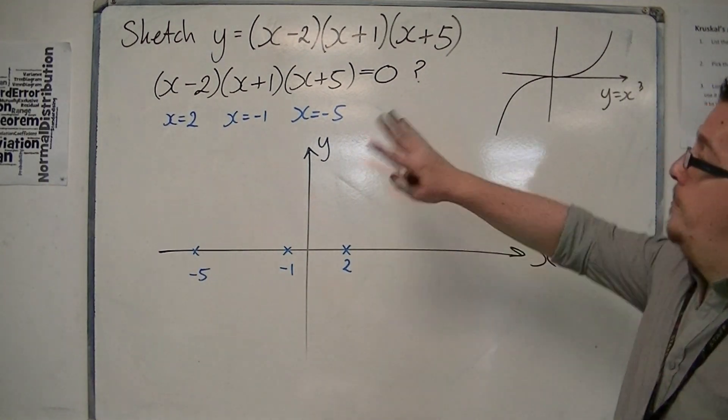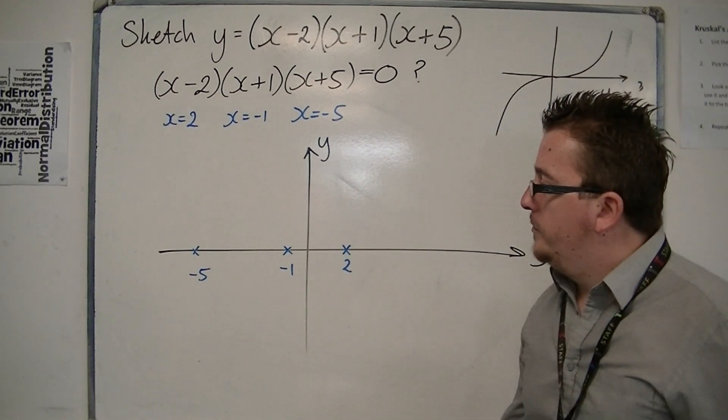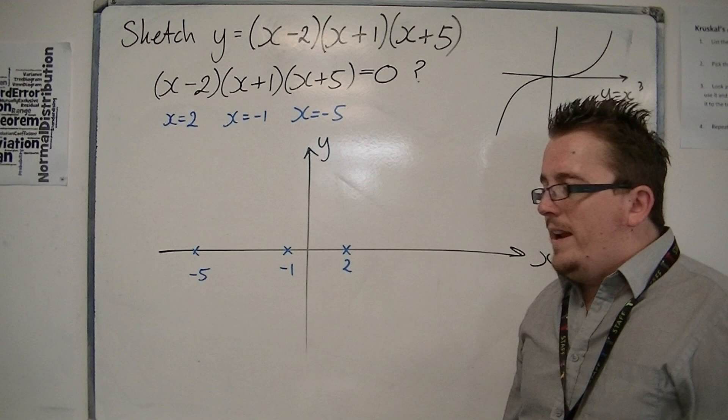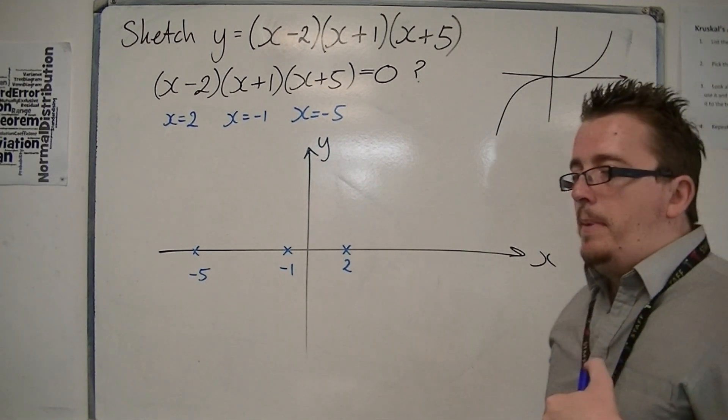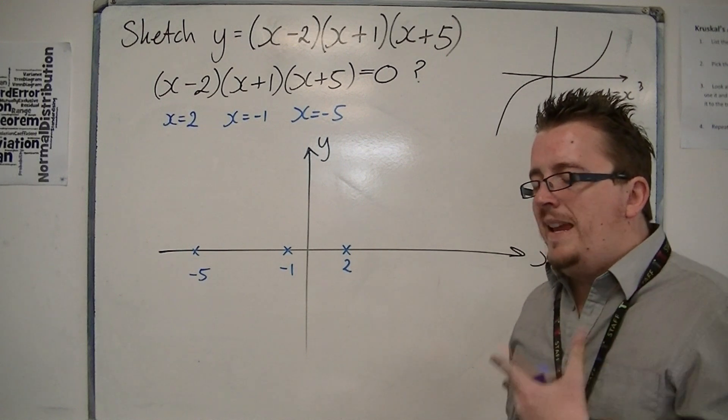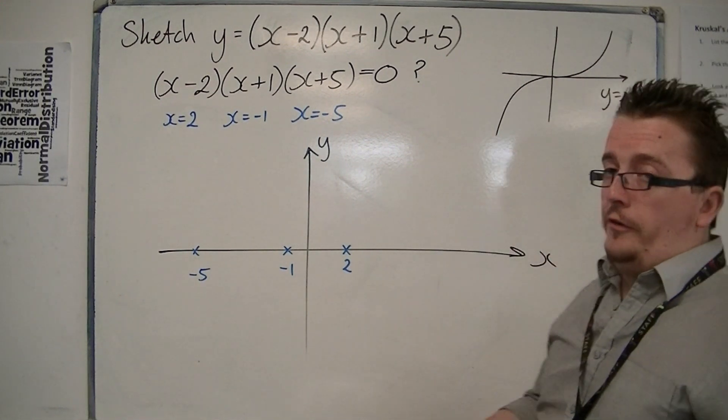There are cubic equations that look different to y equals x cubed. So this one is completely factorized, so we know it crosses at minus five, minus one, and two. Now, where does it cross the y-axis? Well, if you remember back to the previous video, where I worked out where a translation of x cubed crossed the y-axis, it's the same here.